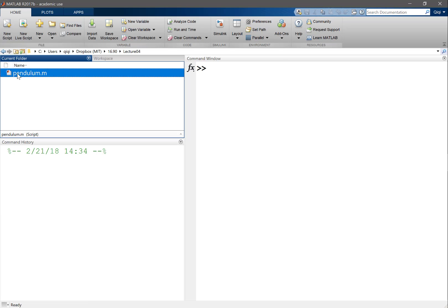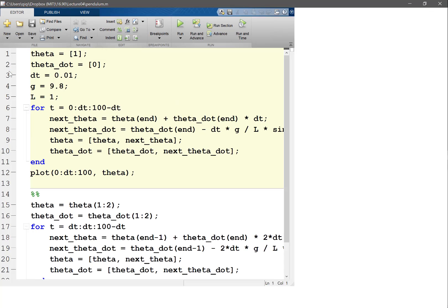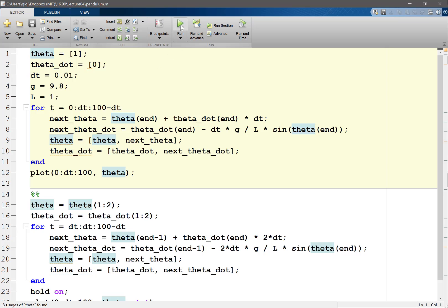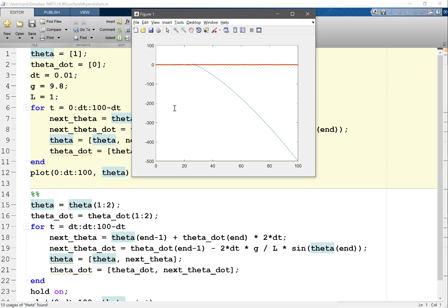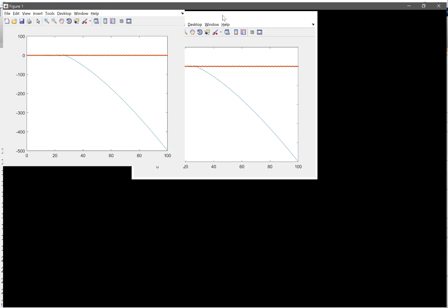So this is our last lecture and you have a pendulum. Let's run this thing. I think I use the forward Euler and the midpoint rule, right? Okay, it's running. The midpoint rule is the red one, the forward Euler is the blue one.